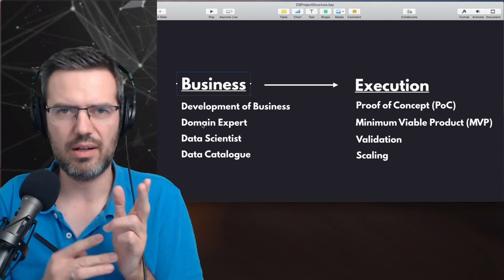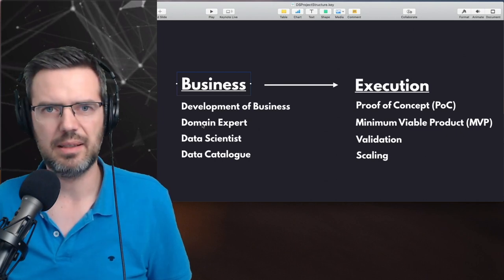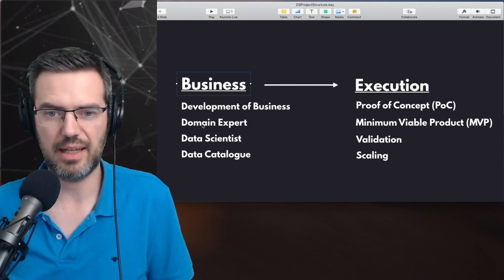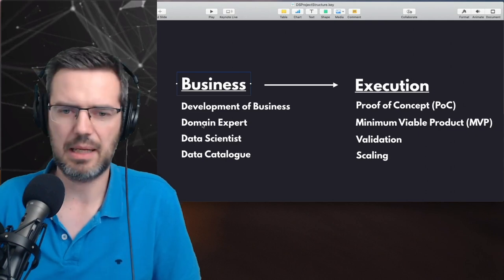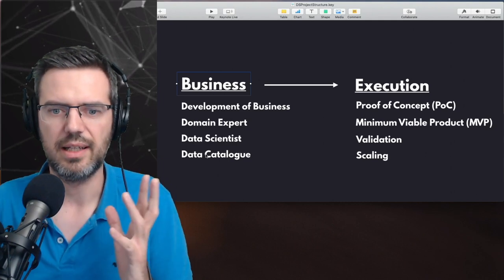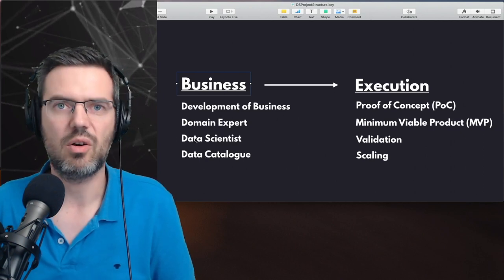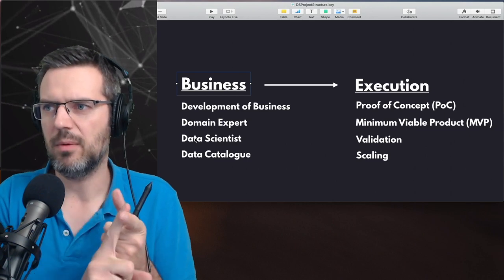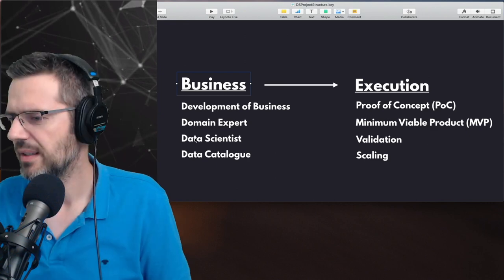Then you have data — or you need some data. You need someone who can analyze data, who can say whether you have that data or don't have it, and who can maybe build a data catalog to catalog the data that is available. So these three people — business development, domain expert, and data person — can talk about what the business is, what the domain behind it is, and how you can possibly solve it with data. Then you go to execution.